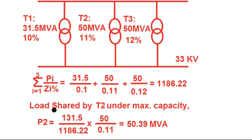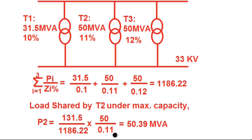Similarly, the load shared by transformer 2 is calculated as P2 = (131.5 / 1186.22) × (50 / 0.11). P2 comes out as 50.39 MVA. Since the maximum capacity of T2 is 50 MVA, it will be slightly overloaded.